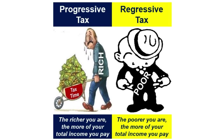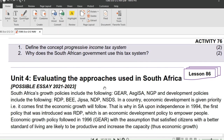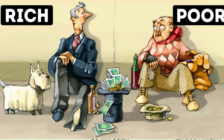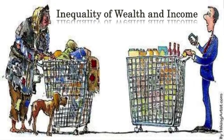In 2005, the Swiss canton of Obwalden implemented a regressive tax system. It was struck down by the Federal Supreme Court of Switzerland in 2007 because it ran counter to the Swiss federal constitution. Question 2: Why does the South African government use this tax system? Obviously they do it to bridge the gap between the rich and the poor, and to redistribute income.